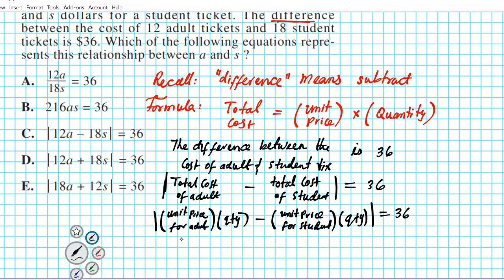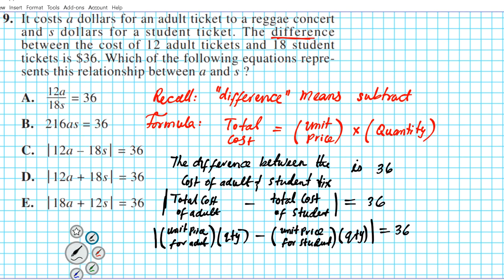So let's set it up. What's the unit price for adult tickets? Let's go up to the problem. For adult tickets, it says it costs a dollars for adult tickets. So we'll put that down. We have a for the unit price for adult tickets times the amount of adult tickets bought is 12. And minus the unit price for student tickets is s and the quantity of student tickets is 18. So this difference is equal to 36.